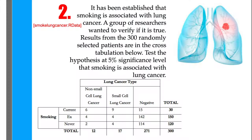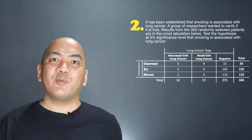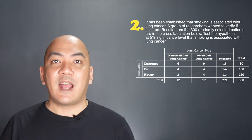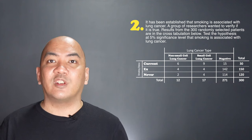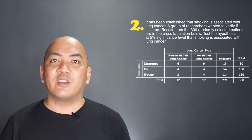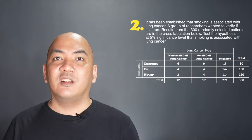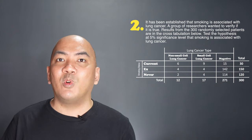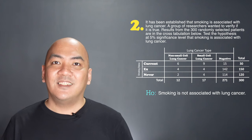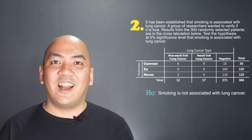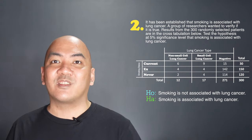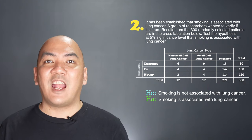Now let's proceed to example two. It has been established that smoking is associated with lung cancer. Researchers wanted to verify this using results from 300 selected patients in a cross-tabulation. We test the hypothesis at 5% significance level that smoking is associated with lung cancer. The table is a 3x3 cross-tabulation with smoking status — current, ex, or non-smoker — and lung cancer type: non-small cell lung cancer, small cell lung cancer, or no lung cancer. The null hypothesis is that smoking is not associated with lung cancer; the alternative is that it is.